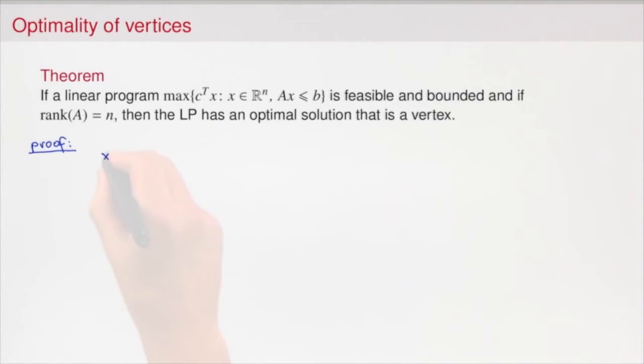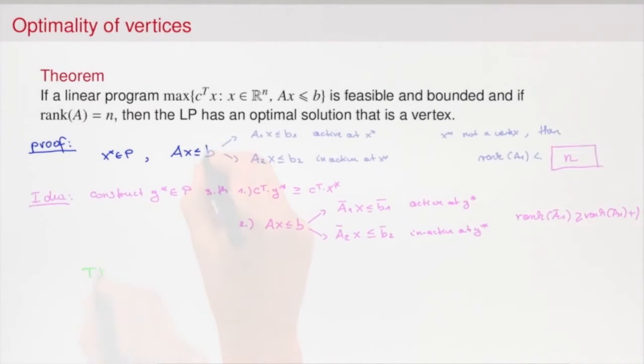The most important prerequisites for this course are Linear Algebra and some proficiency in a programming language like Python. We will understand the basics of linear and discrete optimization from the viewpoint of a mathematician or theoretical computer scientist. This means that we ask questions like: how do I prove optimality of a solution? How do I prove that the method works correctly?